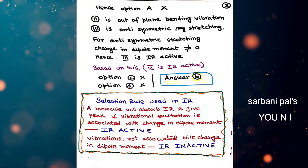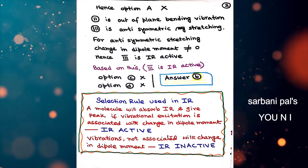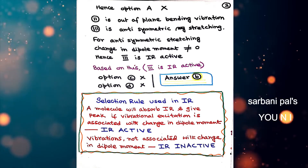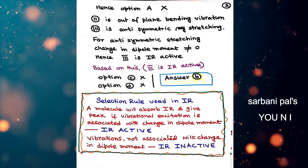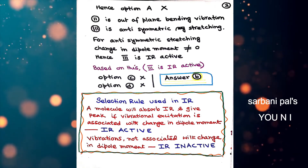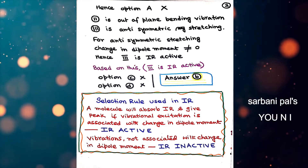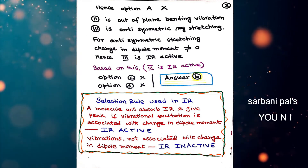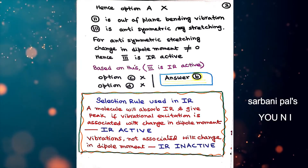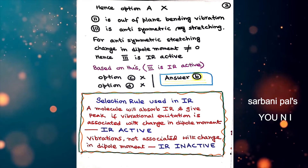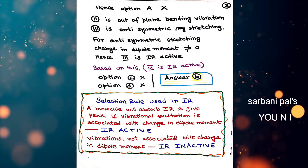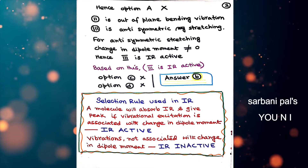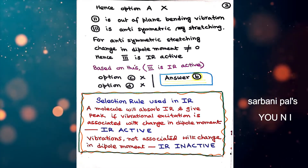Hence option A cannot be the answer. Structure 2 is out-of-plane bending, related to the change in bond angle keeping constant bond length. Structure 3 is the anti-symmetric stretching of sulphur trioxide, where all bonds are not increasing or decreasing simultaneously. After anti-symmetric stretching, the dipole moment of sulphur trioxide is not 0, unlike the symmetrical stretching which leads to no change in dipole moment.